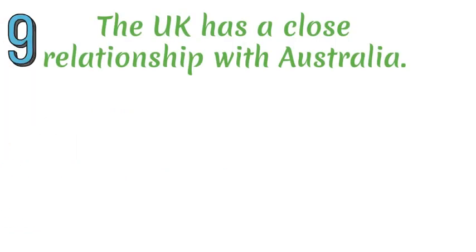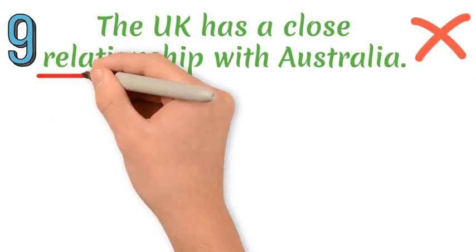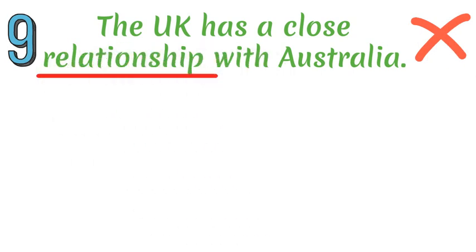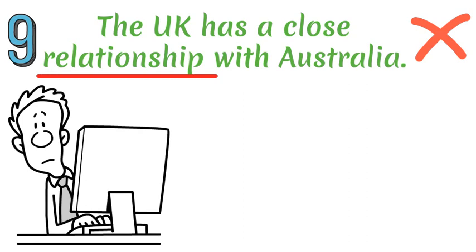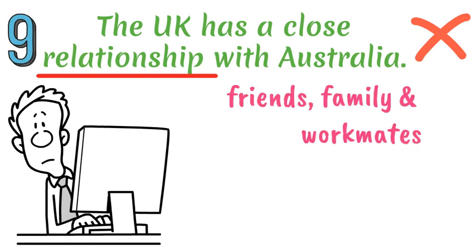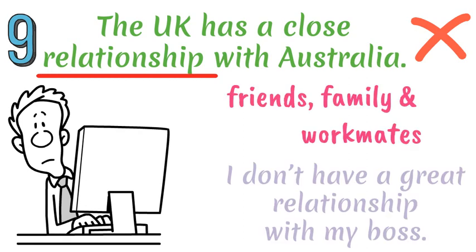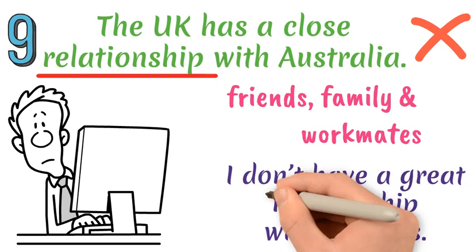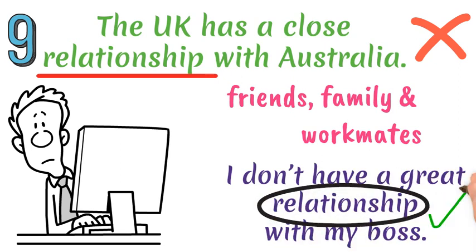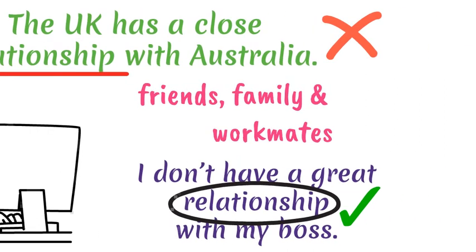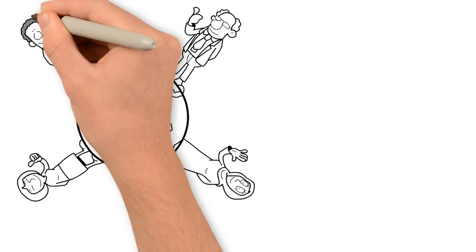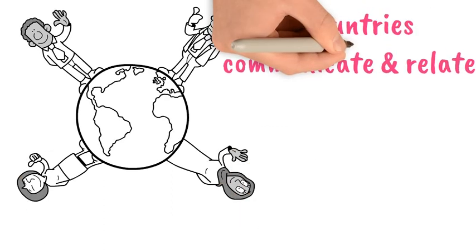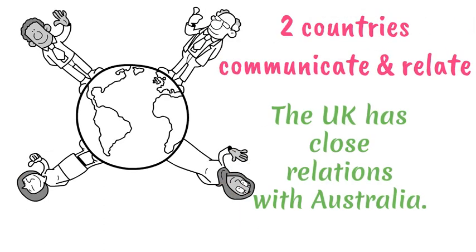Mistake number nine. A 'relationship' describes the way people behave and feel towards each other, and we use this for people like friends, family members, and workmates. However, we don't use 'relationship' to describe how two countries communicate and behave towards each other. We use 'relations' in this case, and it's always in the plural form. For example: 'The UK has close relations with Australia.'